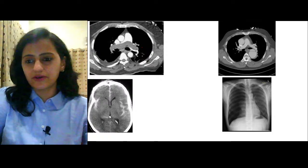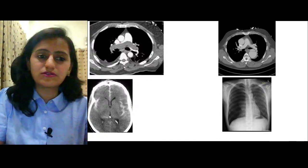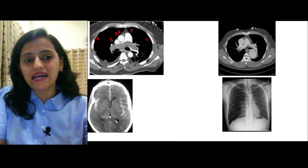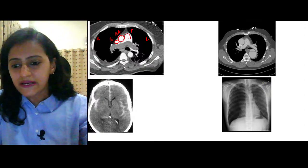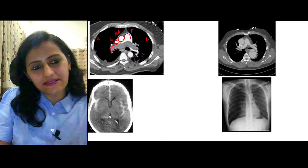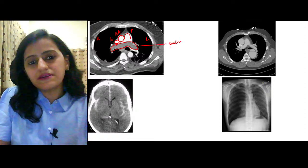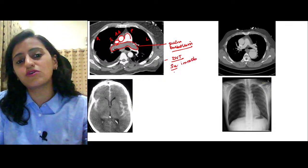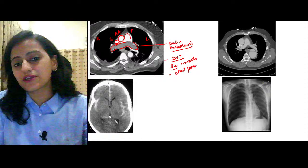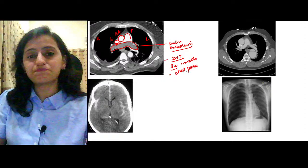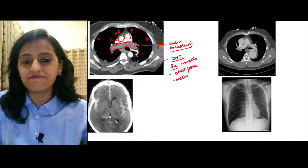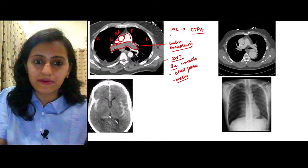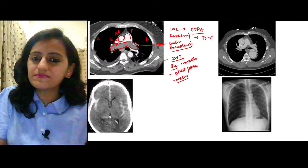Absolutely right — it is pulmonary embolism. Identifying the anatomy: remember, in radiology right and left are opposite. SAP from right to left — that is SVC, ascending aorta, and pulmonary trunk. The pulmonary artery is showing a filling defect — this is pulmonary embolism. Remember the predisposed surgery patient who is immobilized, presenting with acute chest pain, dyspnea, and tachypnea. Modified Wells criteria is used for pulmonary embolism.